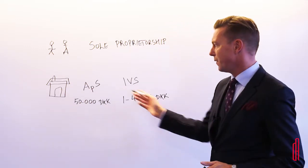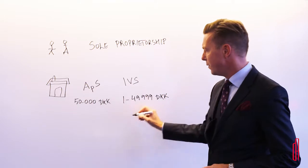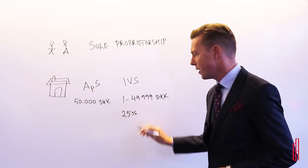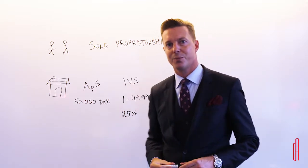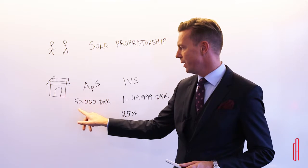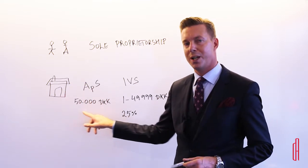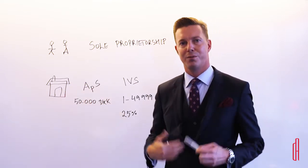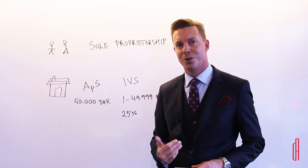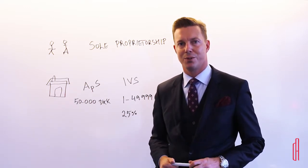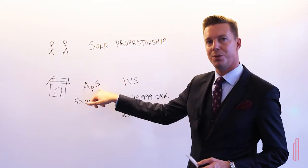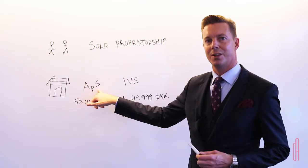The main other difference is that with an IVS there is a requirement to save 25 percent of the revenue every year, and you need to do that until you have 50,000 Danish kroner in equity. The moment you reach 50,000 Danish kroner in equity, you are allowed to pay out a dividend to yourself. You can also convert the IVS to an APS if you would prefer that.